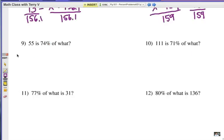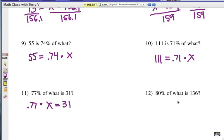Alright, I want you to try four more. In all of these cases, the of number is missing. That's the whole amount. And again, translate into an equation, and make sure that your answer is in the proper form. Good luck. Alright, number nine. 55 is 74, don't forget to change it to a decimal, times x. Or 111 is 71, 0.71, times x. And 0.77 times x equals 31. And 0.80, or I can leave the zero blank, I can drop that zero, times x equals 136. That's how you translate it into an equation. Now let's solve.